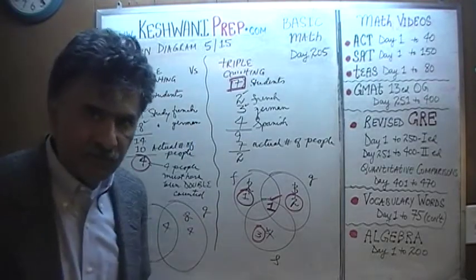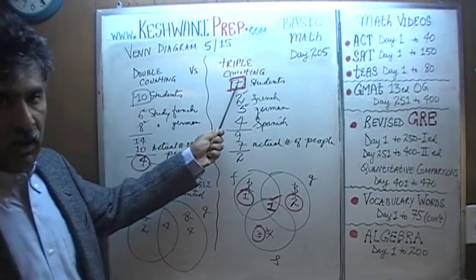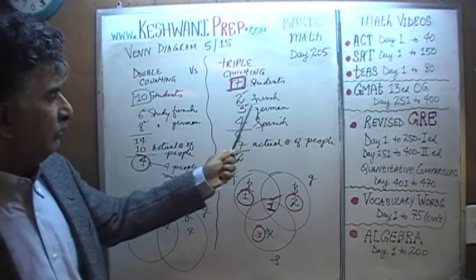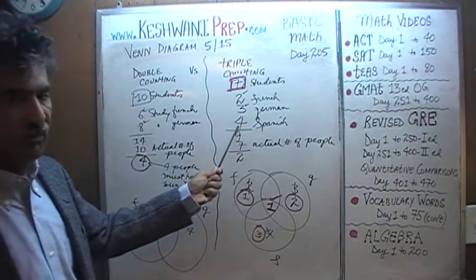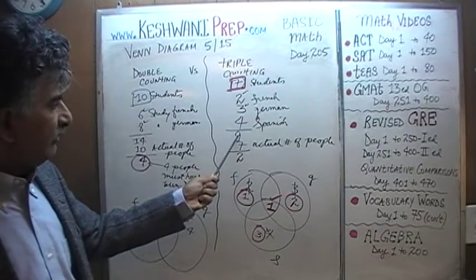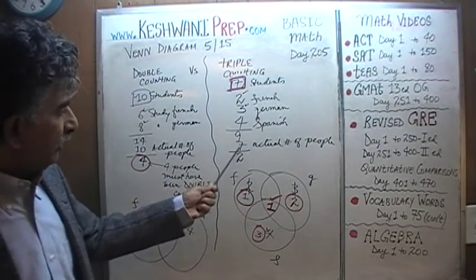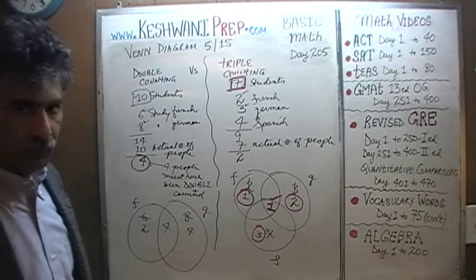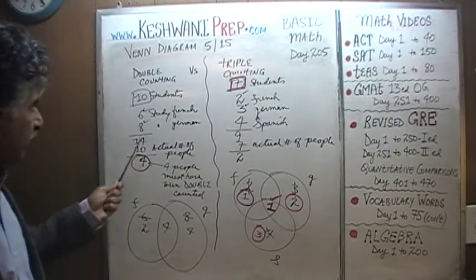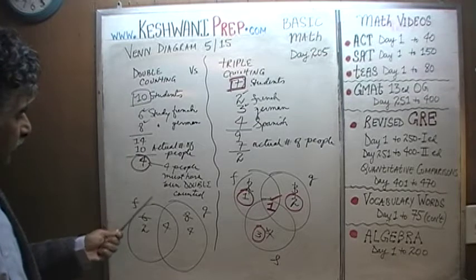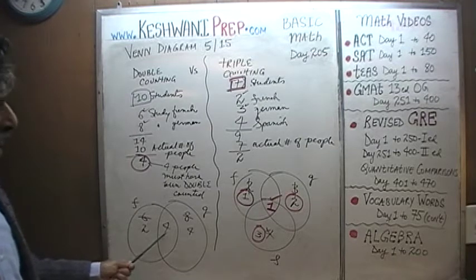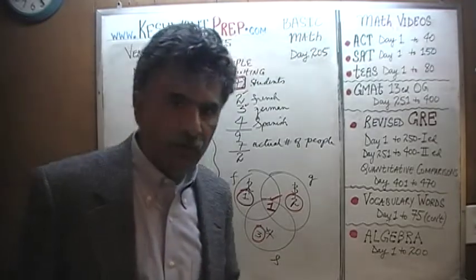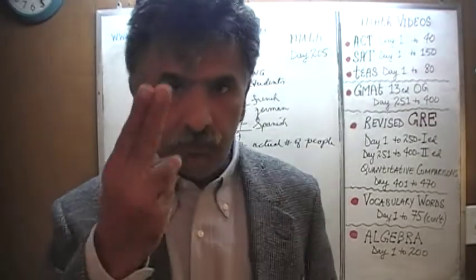Triple counting is a little bit tricky. We have 7 students: 2 told us they studied French, 3 studied German, 4 studied Spanish. When we add up these figures we get 9, but the actual number of people in the group is only 7. We have an overflow of 2. Here in double counting, whatever overflow you see you just transfer to the common area and you're done. Here you have to do a little bit of thinking.